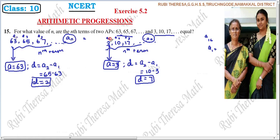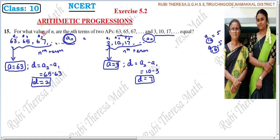For example, the first term of the first sequence is 63 and the first term of the second is 3; the second term of the first is 65 and the second of the other is 10 — these are different. But at some position, say the 16th term, the value in one sequence equals the value in the other sequence. So both sequences share a common Nth term value. That is, this N is what we need to find.